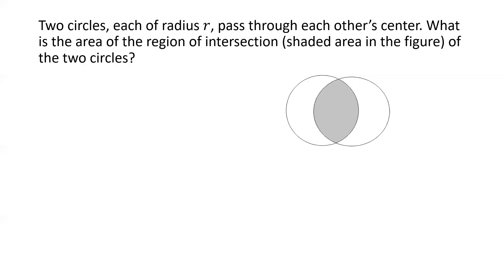So how do we solve this problem? We recognize that this area of overlap or intersection is not really any standard circle-like shape we can relate to immediately — it's not like a sector, a quadrant, or a semicircle. So the thing to do in such cases is try to express that area in terms of more standard geometric shapes.